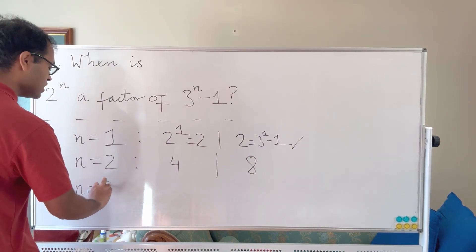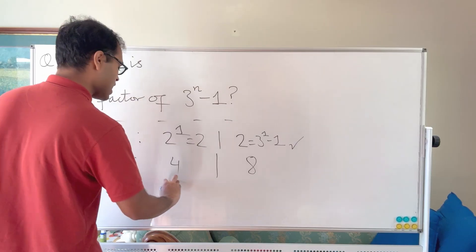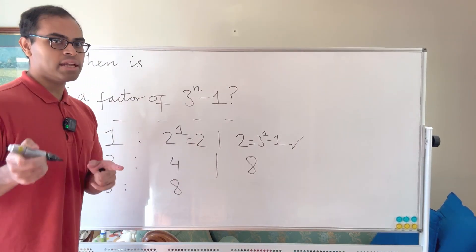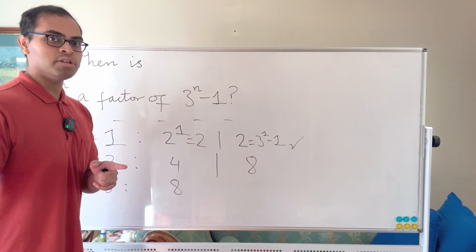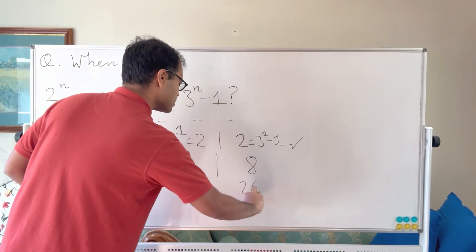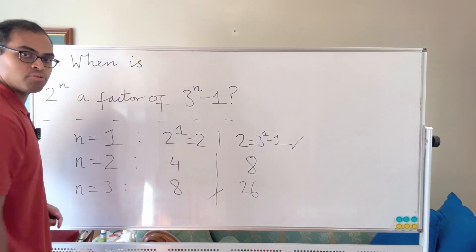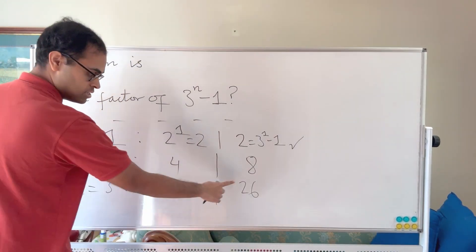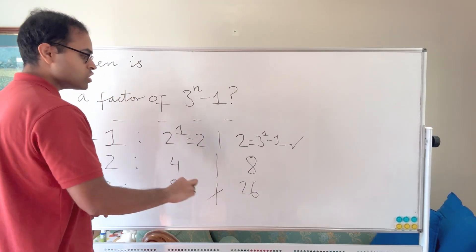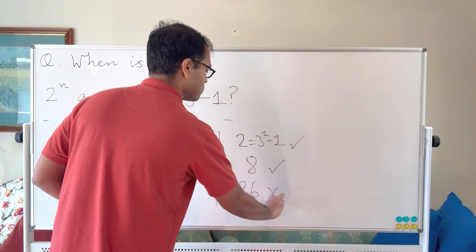For n equals 3 things get interesting. 2^3 is 8, but 3^3 minus 1 is 27 minus 1 which is 26. And 8 does not divide 26 — I put a hash there to indicate it does not divide. So n equals 3 is not a valid value.